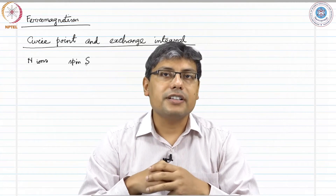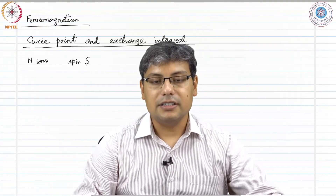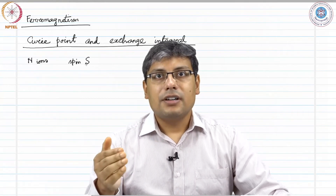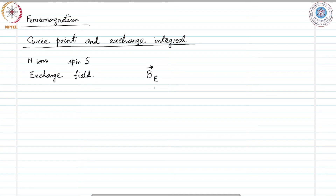Of course, this is an oversimplified description — a ferromagnet is not so simple that all spins are always aligned along the same direction — but to begin with, this is the first-order description of a ferromagnet. If we have that kind of a field, we can call this internal field the exchange field. If we treat the exchange field as equivalent to an external magnetic field, we call it B_E — E for exchange — and the applied magnetic field we call B_A.